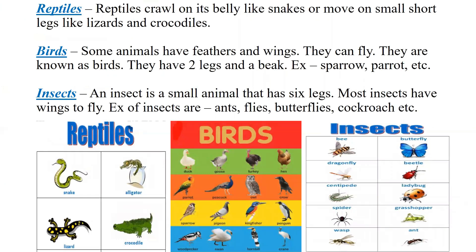Now let me tell you about reptiles, birds, and insects. You must have seen snakes, lizards, and crocodiles — these are reptiles. Reptiles are animals that come from eggs. They crawl on their belly, like a snake, or move on small short legs, like lizards and crocodiles.